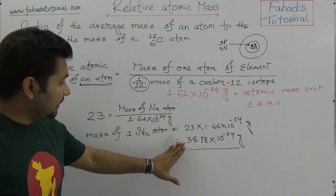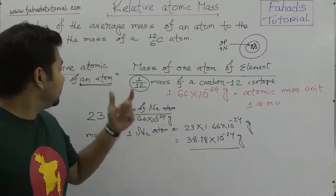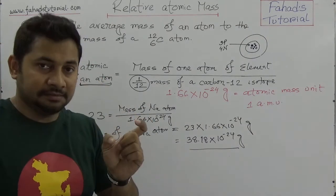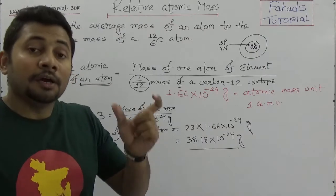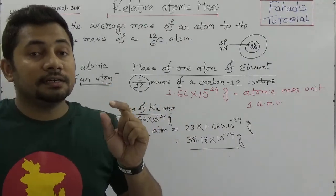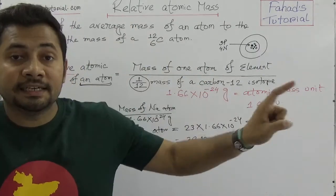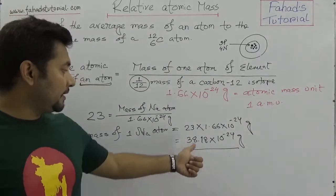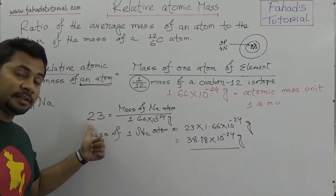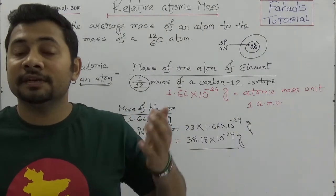So if we need to find out the relative atomic mass of any atom, we need to first know the mass of one atom of that element. We find it out because we know from the periodic table the relative atomic mass. So if we need to find out the relative atomic mass of chlorine, we divide the mass of one chlorine atom by this value — the atomic mass unit.